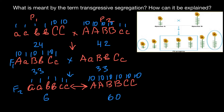The parental generation showed 24 cm and 42 cm, but in the F2 generation we see 6 cm and 60 cm. This explains the picture: how it is possible that when we cross two parents, the progeny can show phenotypes more extreme than either parent, rather than just a blend of the parents. This is transgressive segregation.